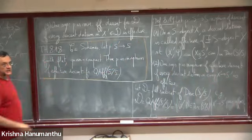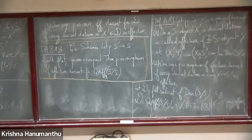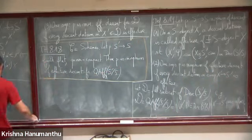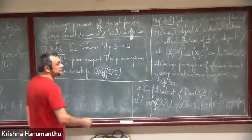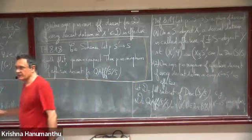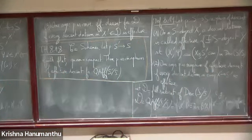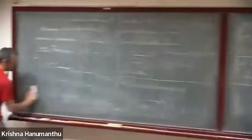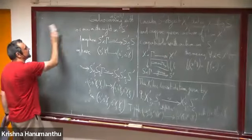So if X' is quasi-affine over S', then every descent datum is effective — that is, the object descends. I will explain a little bit the proof of this theorem because some ingredients will be used later.